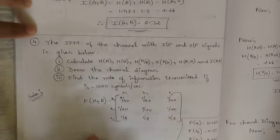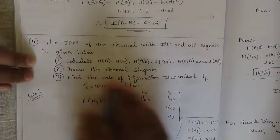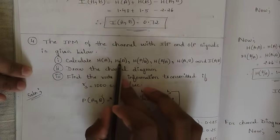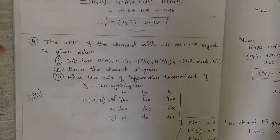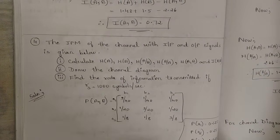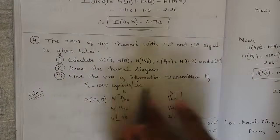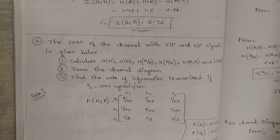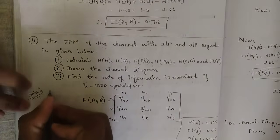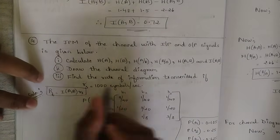Now the second problem: the joint probability matrix (JPM) of the channel with input and output signals is given. You need to: (1) calculate H(A), H(B), H(A|B), H(B|A), H(A,B), and I(A,B); (2) draw the channel diagram from the channel matrix P(B|A); and (3) find the rate of information transmitted if Rs = 1000 symbols per second, using the formula Rt = I(A,B) × Rs.